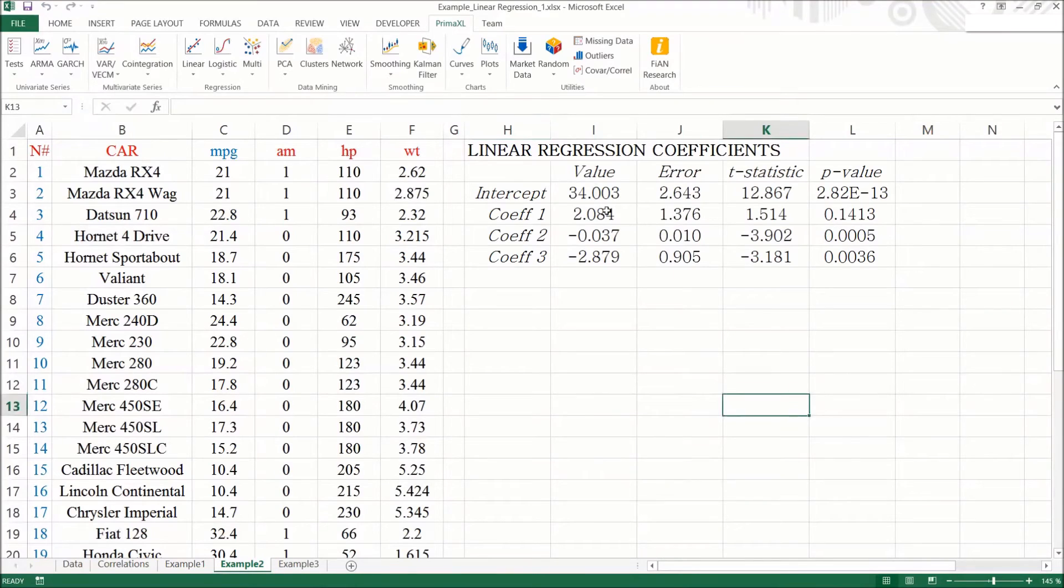Great! The p-values for beta2 and beta3 are smaller than the reference value of 0.05. So, the horsepower and the weight have meaningful impact on the mileage of the car. However, the beta1, which is about 2, has a relatively large p-value, 0.143. Thus, we cannot say that the MPG difference is meaningful. According to this result, we cannot tell which type of transmission is better.